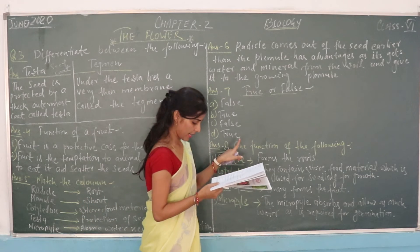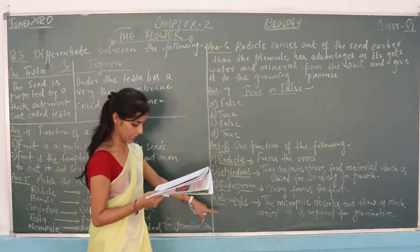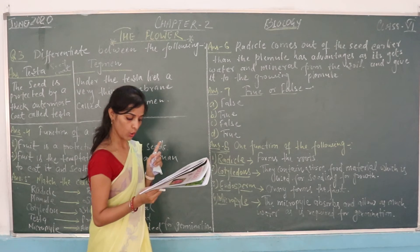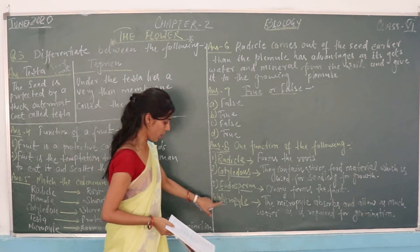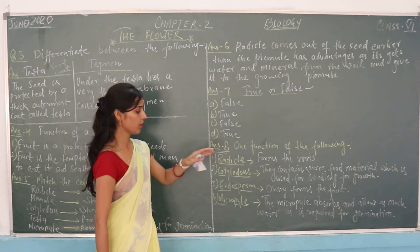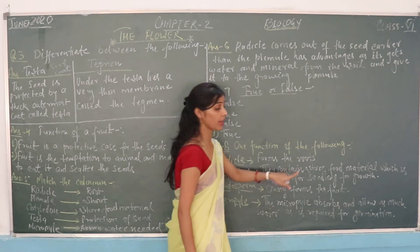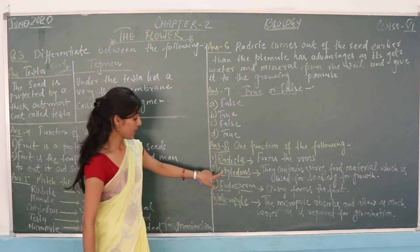Next, question number 8: State the function of the following. Radical, cotyledon, endosperm, and micropyle. Radical's function: Forms the root.